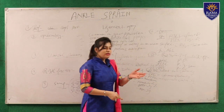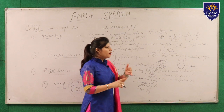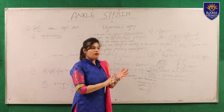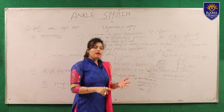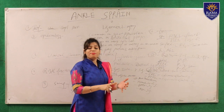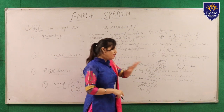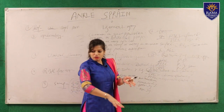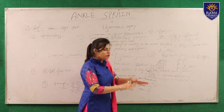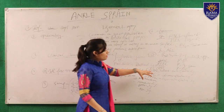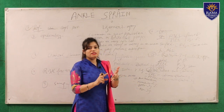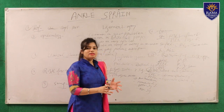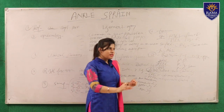In phase four, the goal is return to sports for the athlete. We continue previous exercises and add plyometric training, agility training, and proprioceptive training. These are very important in the last phase because the athlete is returning to the field. We perform strengthening exercises, stretching exercises, plyometric, agility exercises, and balance training.